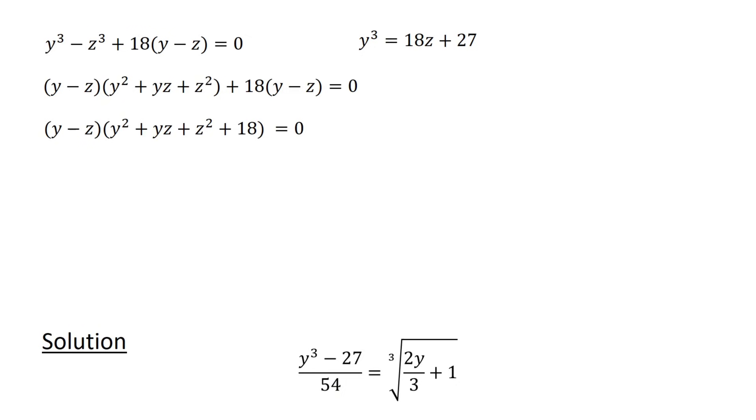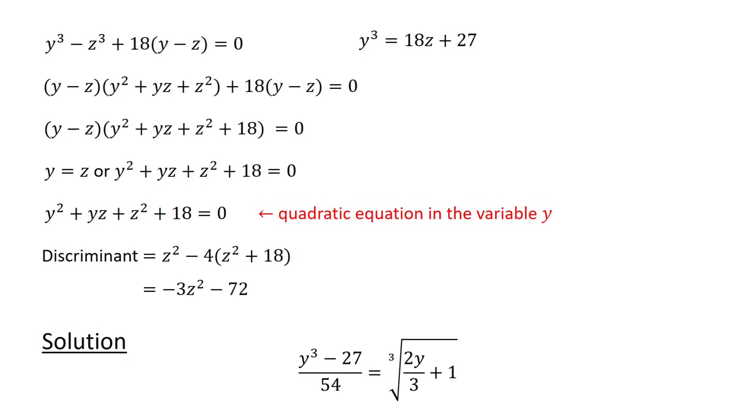Therefore, we have y equals z or y squared plus yz plus z squared plus 18 equals 0. First, consider the case when y squared plus yz plus z squared plus 18 equals 0. Treating this as a quadratic equation in the variable y, the discriminant is given by z squared minus 4 times z squared plus 18, or minus 3z squared minus 72, which is negative. Therefore, there are no real solutions for this case.